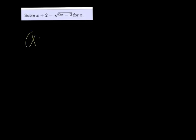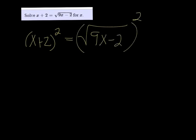So take the left side, x plus 2 squared, and then the square root of 9x minus 2 squared. What happens is the square and the square root cancel each other out.